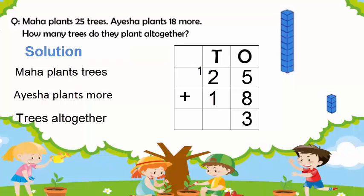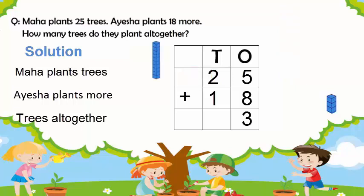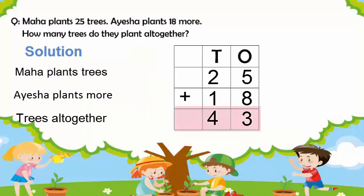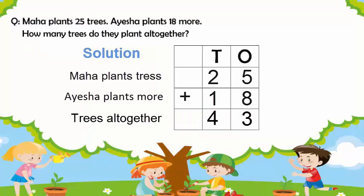Now we do addition in the tens column. We have the one ten we carried forward, then two tens, and then one ten. Adding the tens column: one, two, three, and four — we have four tens. We write 4 in the tens column. Our answer is forty-three. So Maha and Aisha plant forty-three trees all together.